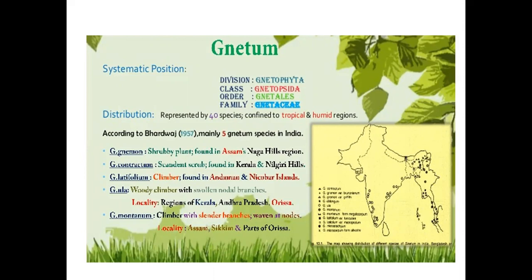Natophyta, Natales and Nateci distribution represented by 40 species confined to tropical and humid regions. According to Bharadwaj in 1957, mainly 5 Natum species are found in India. Natum nemon, a shrubby plant, is found in the Assam and Naga Hills region.